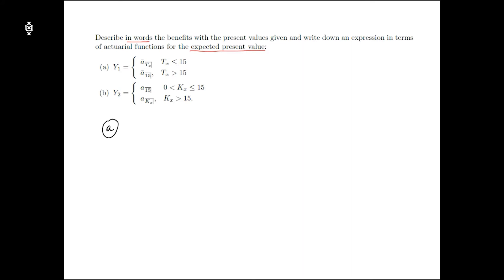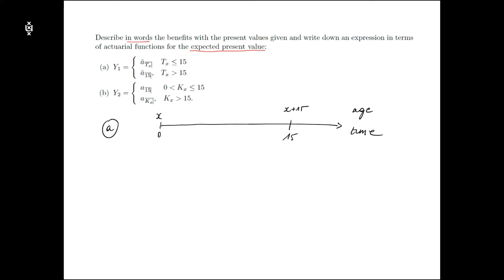Let us start with part A. We have a random variable Y1, and it makes a distinction between tx being less than or equal to 15 and tx being above 15. tx is the future lifetime in continuous time of an individual who is currently age x. If I picture a timeline for this product, we have age and time, with an anchoring point at x plus 15, which corresponds to time 15.